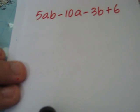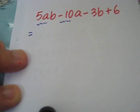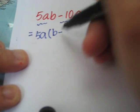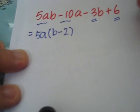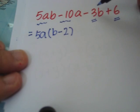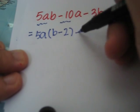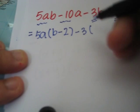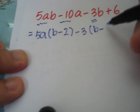Now, how about this? So, I remove 3a. What is left behind would be b minus 2. Here, if I were to remove negative 3, I will get b minus 2.